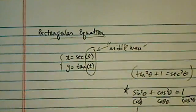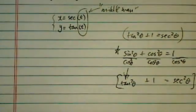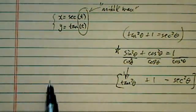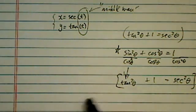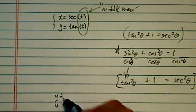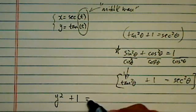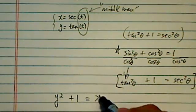So, here we have it. We're going to be using this one because, as you can see, tangent, which is really y squared plus 1 is equal to secant squared, which is x squared.